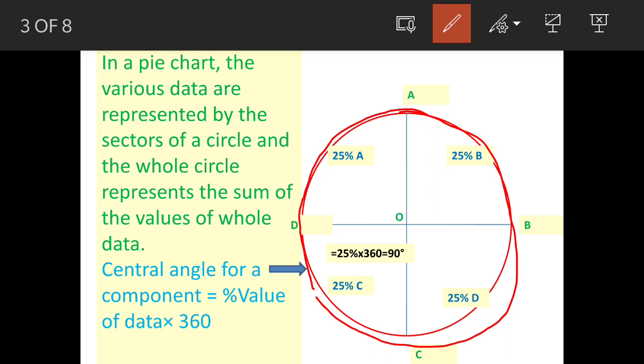That means all the data contained in circle will be equal to 100%. Now we have shown four items: Item A 25%, item B 25%, item C 25%, and item D 25%. So central angle for item C will be 25% of the entire angle. Entire angle is 360 degrees.